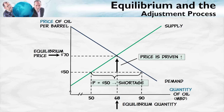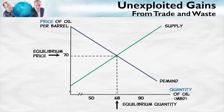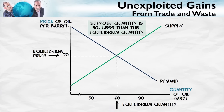The equilibrium price is the only stable price. Through a similar kind of argument, we can show why the quantity such that quantity demanded equals quantity supplied is the equilibrium quantity. Namely, choose any other quantity, and we can show that that can't be in equilibrium.